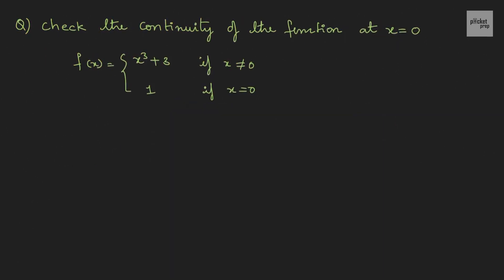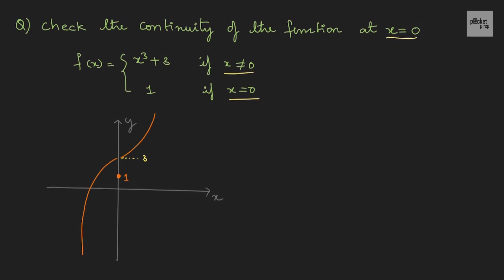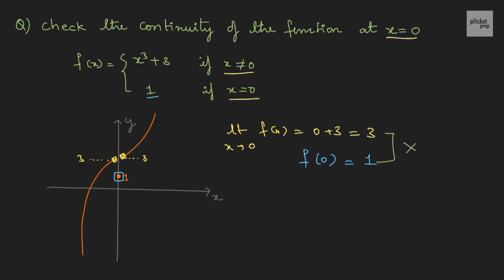Let's try another question: check the continuity at x = 0 of f(x) = x³ + 3 if x ≠ 0, and f(x) = 1 if x = 0. Drawing the diagram, we can see the right-hand neighborhood equals 3 and the left-hand neighborhood also equals 3. So the limit as x tends to 0 of f(x) = 0 + 3 = 3. However, f(0) is given as 1. Since 3 ≠ 1, these two are not equal, therefore this function is not continuous.